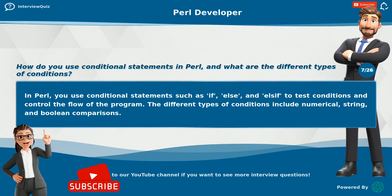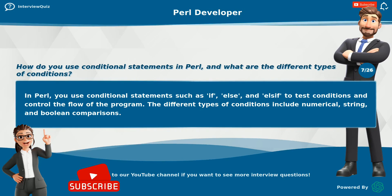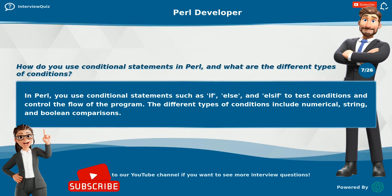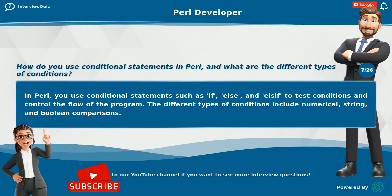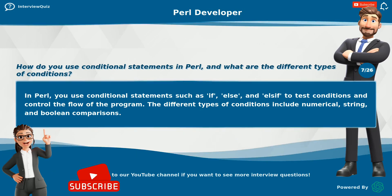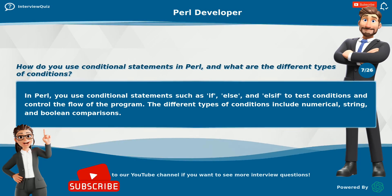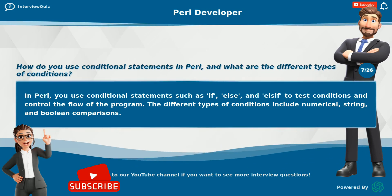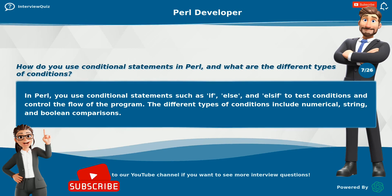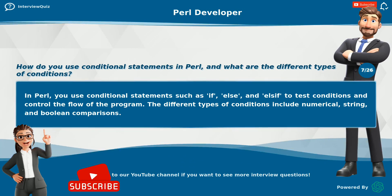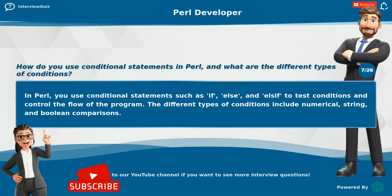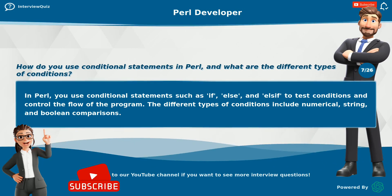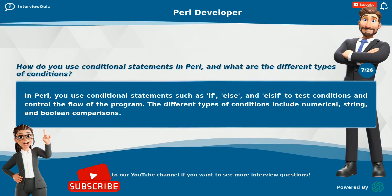How do you use conditional statements in Perl, and what are the different types of conditions? In Perl, you use conditional statements such as if, else, and elsif to test conditions and control the flow of the program. The different types of conditions include numerical, string, and boolean comparisons.